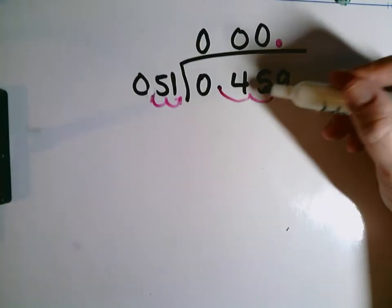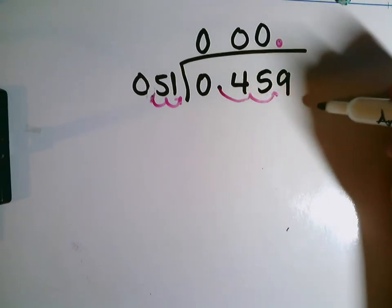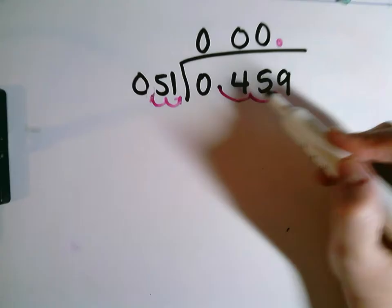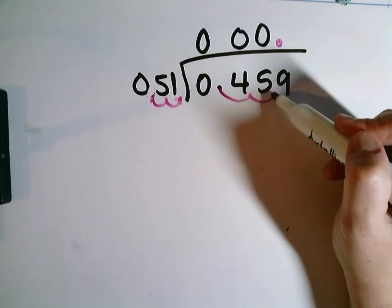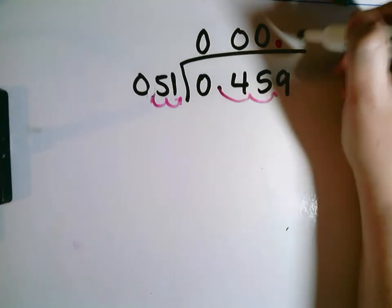But then if I look at 459, I can get groups of 51 out of 459. So again, I'm going to think, well, five times nine is 45. So 51 times nine is probably going to be close to 459. So let's try a nine here.